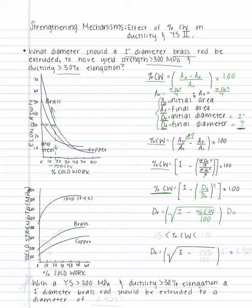Now let's do the same for the second plot by locating 300 megapascals on the yield strength axis, drawing a horizontal line over to the brass curve, and then a vertical line down to the percent cold work axis. This gives us approximately 13% cold work, and anything greater than 13% cold work gives us greater than 300 megapascals.